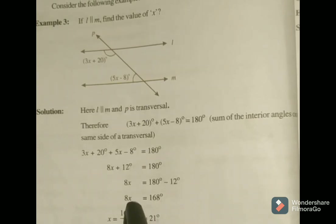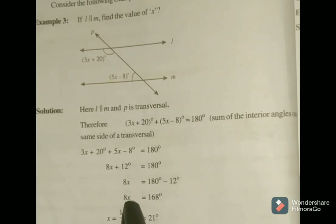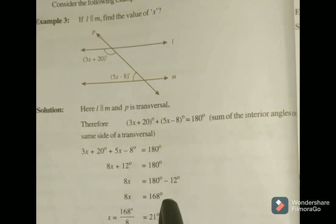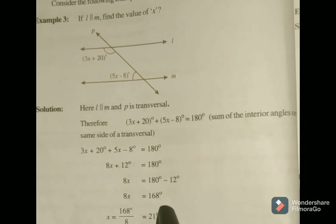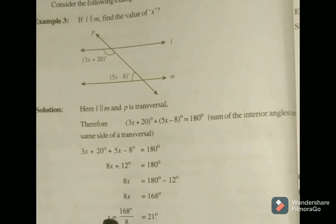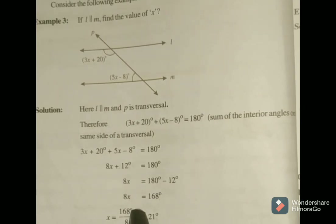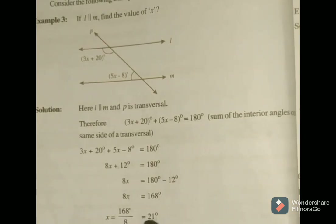In LHS, 8X means 8 into X. So the multiplication transposes to RHS and it will change to division. Therefore X equals 168 degrees divided by 8, which gives X equal to 21 degrees.